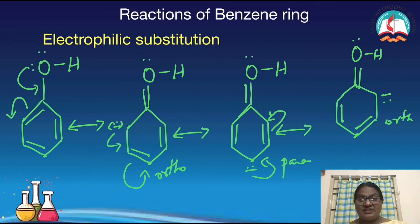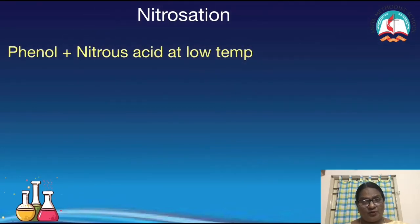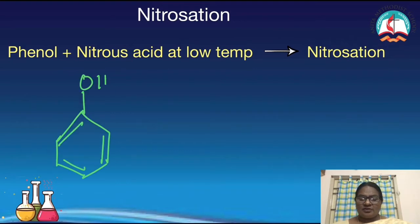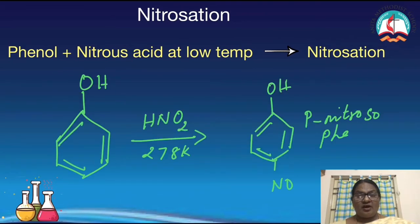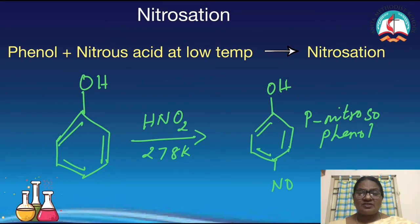The first reaction is nitrosation. Phenol, when it reacts with nitrous acid at low temperatures, undergoes a reaction called nitrosation, where the nitroso group is introduced. The nitroso group (-N=O) is introduced at the ortho or para position. The compound formed is para-nitroso phenol. When both positions are exactly opposite each other, it is called the para position or the para isomer.